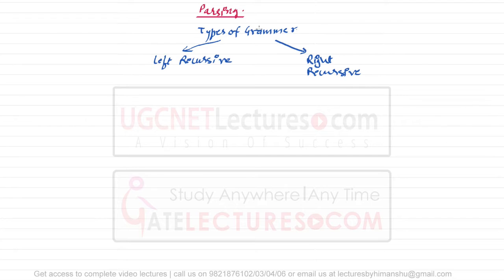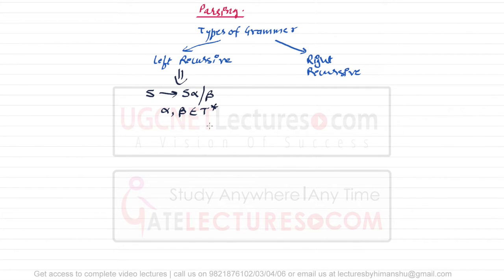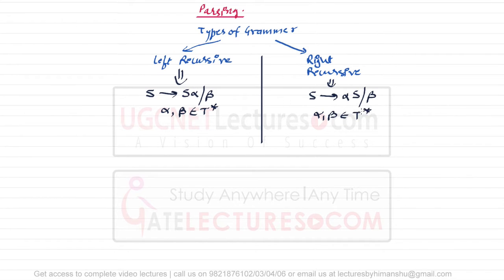When I say a grammar is a left recursive grammar, that means all the productions are of the form S derives αS/β, where α and β belong to terminal star. When I say there is a right recursive grammar, that means all the productions are of the form S derives αS/β, where α and β belong to T-star — but S appears on the right side.